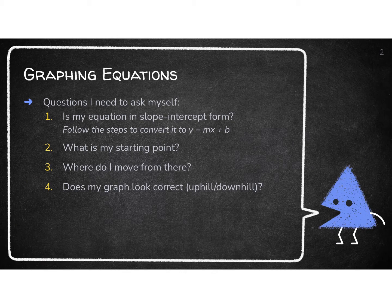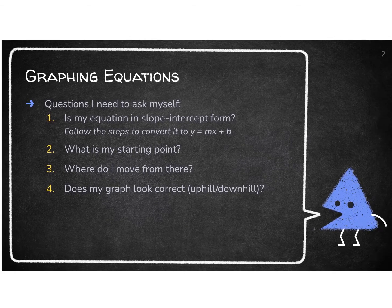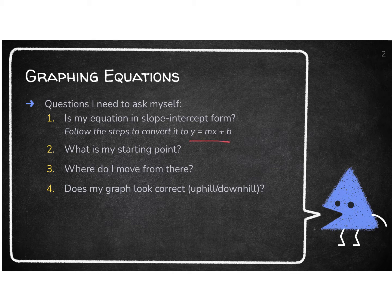The steps that we are going to follow are the same exact steps that we used in the last activity, except number 1 is brand new. Your equation may not be in slope-intercept form. It might not be y equals mx plus b. So we need to get the y alone first before we can go ahead and graph it.